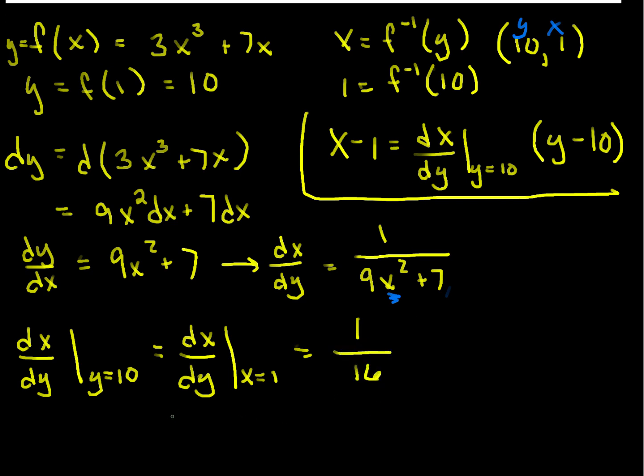So now I know what that is, and so finally the equation of my tangent line will be x minus 1 is equal to 1 over 16 times y minus 10.